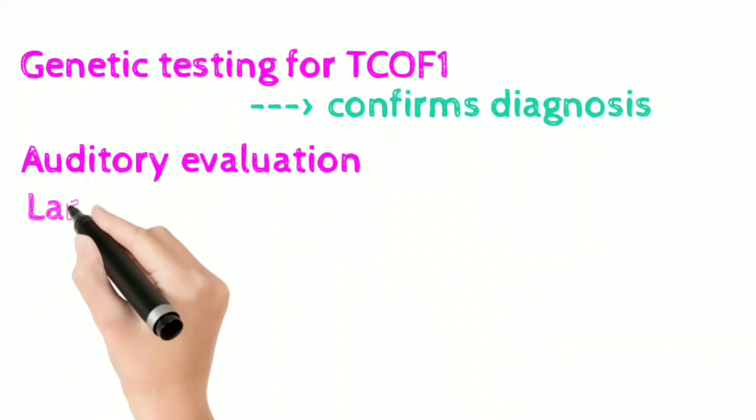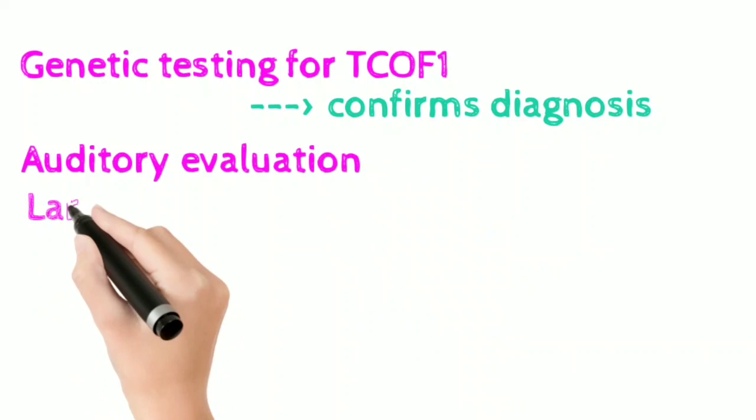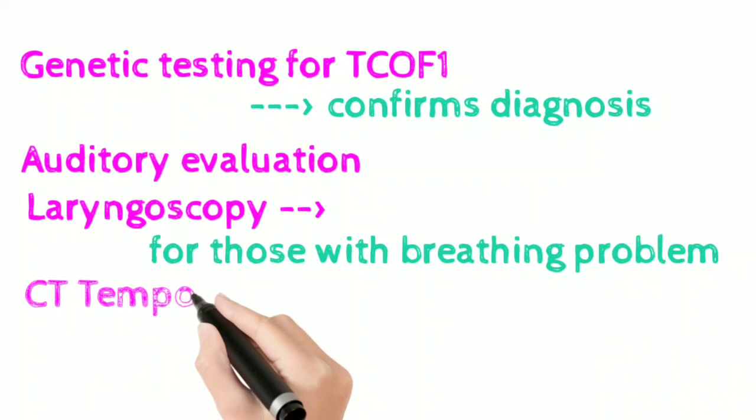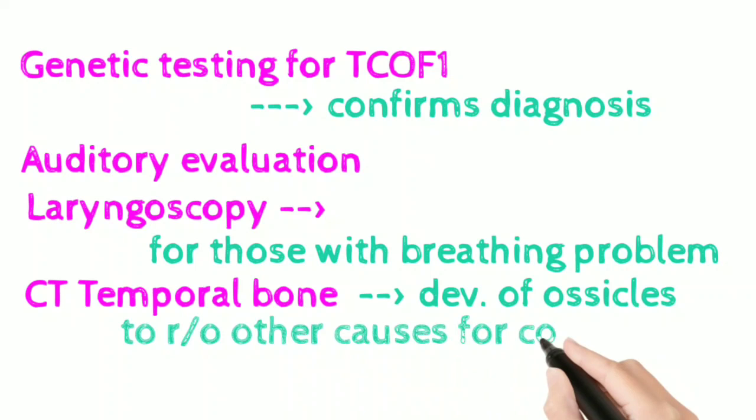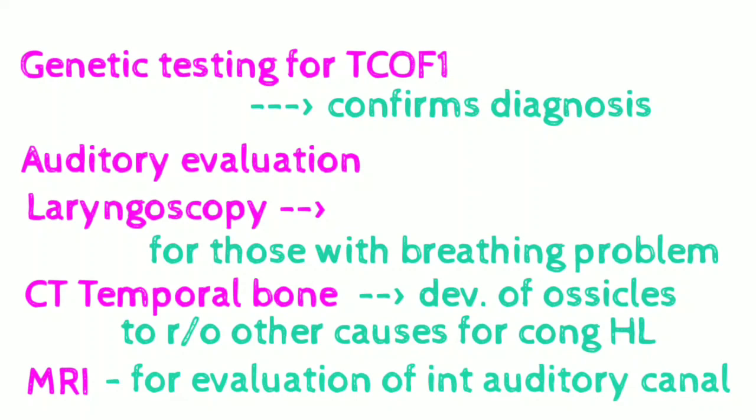Auditory evaluation has to be done in a suspected newborn. If the baby has a breathing problem, a laryngoscopy may be done. CT of the temporal bone may be taken to look for development of ossicles and also to rule out other causes of congenital hearing loss. An MRI may be helpful to evaluate the internal auditory canal.